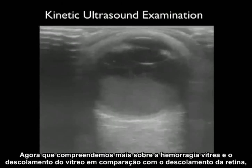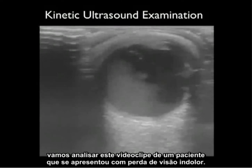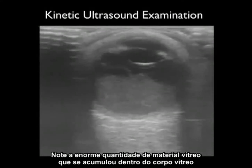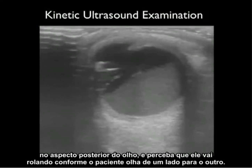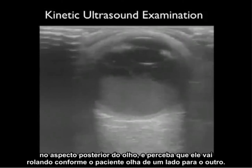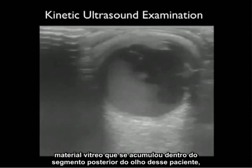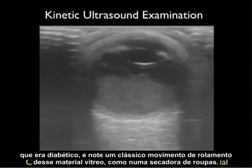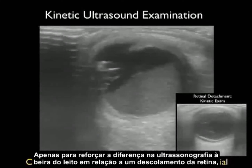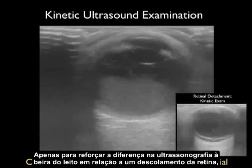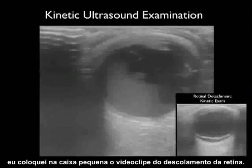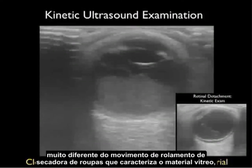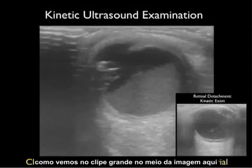Now let's look at this video clip from a patient who presented with painless loss of vision. Note the huge amount of vitreous material accumulated within the vitreous body, and notice that it tumbles around as the patient looks from side to side. This was a large amount of vitreous hemorrhage in a diabetic patient — notice the classic clothes-dryer tumbling motion. In the small inset box, a retinal detachment clip shows the tethered membrane appearance by comparison, which is very different from the tumbling motion of the vitreous material seen in the main clip.